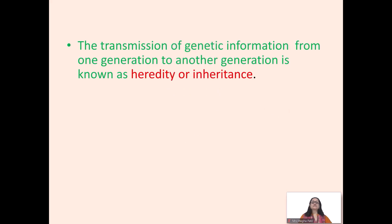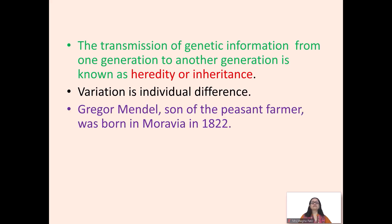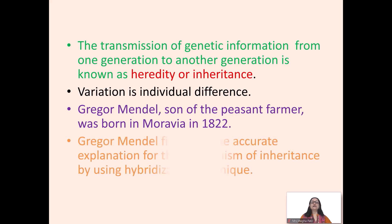The transmission of genetic information from one generation to another generation is known as heredity or inheritance. Variation is nothing but the individual difference. John Gregor Mendel, son of a peasant farmer, was born in Moravia in 1822.